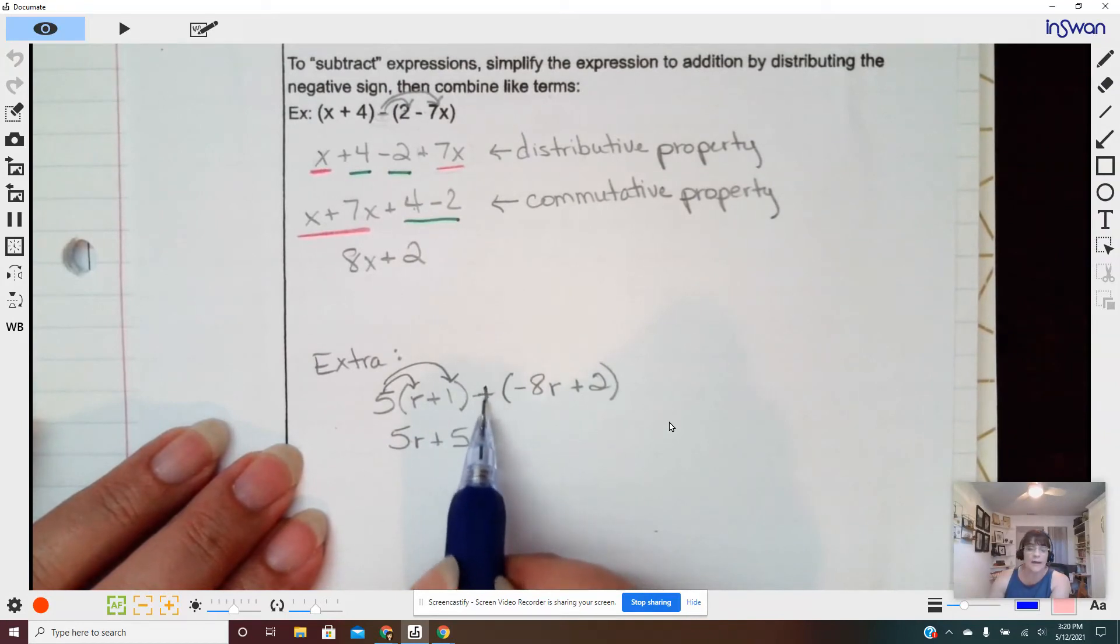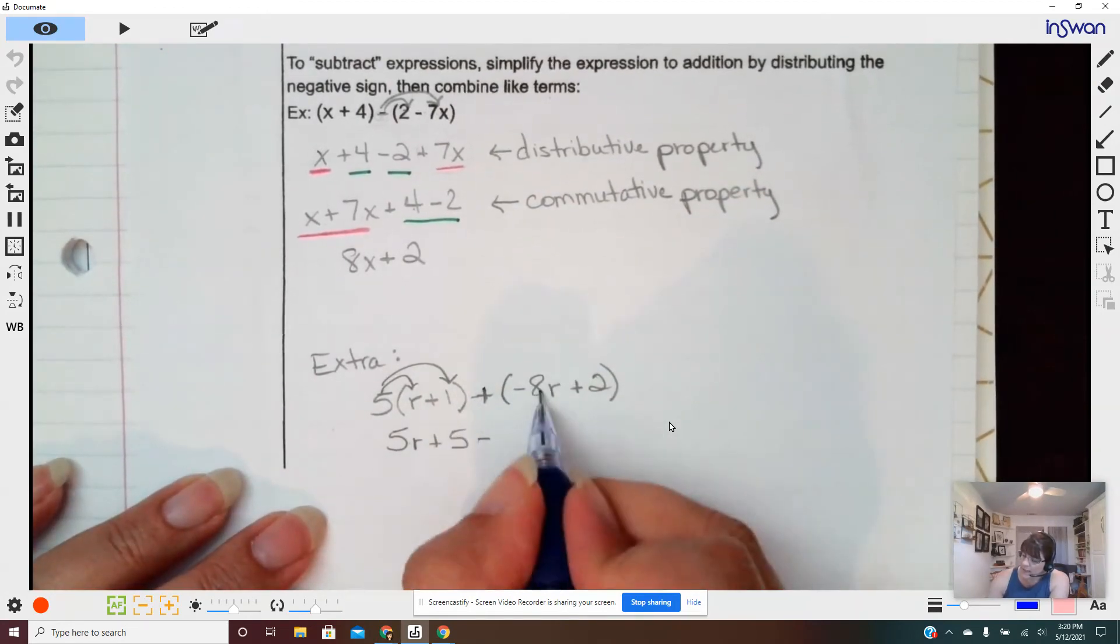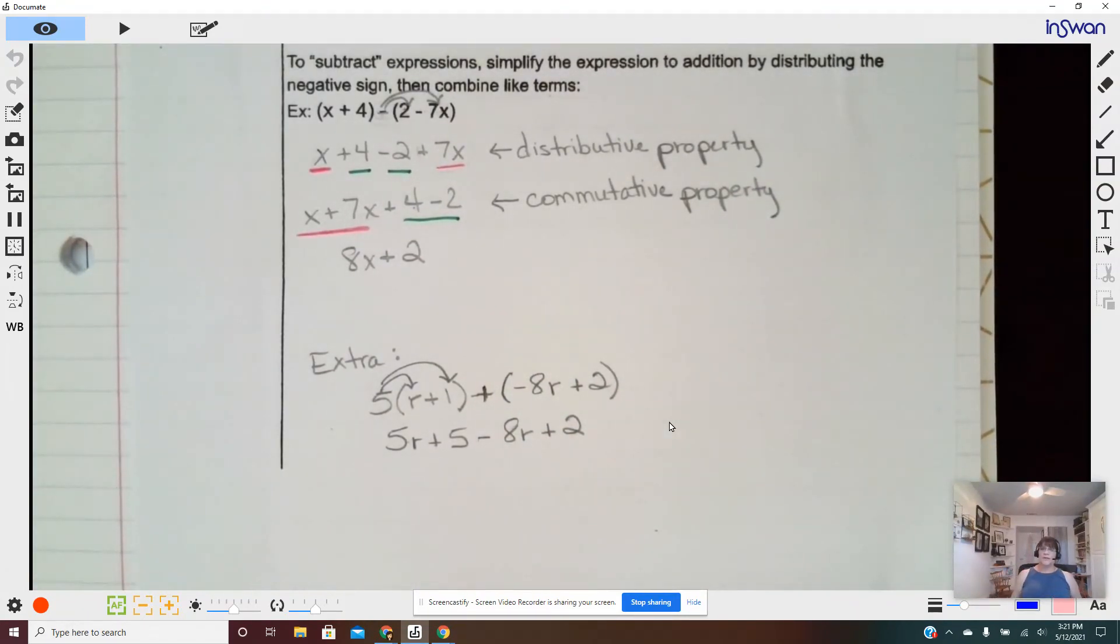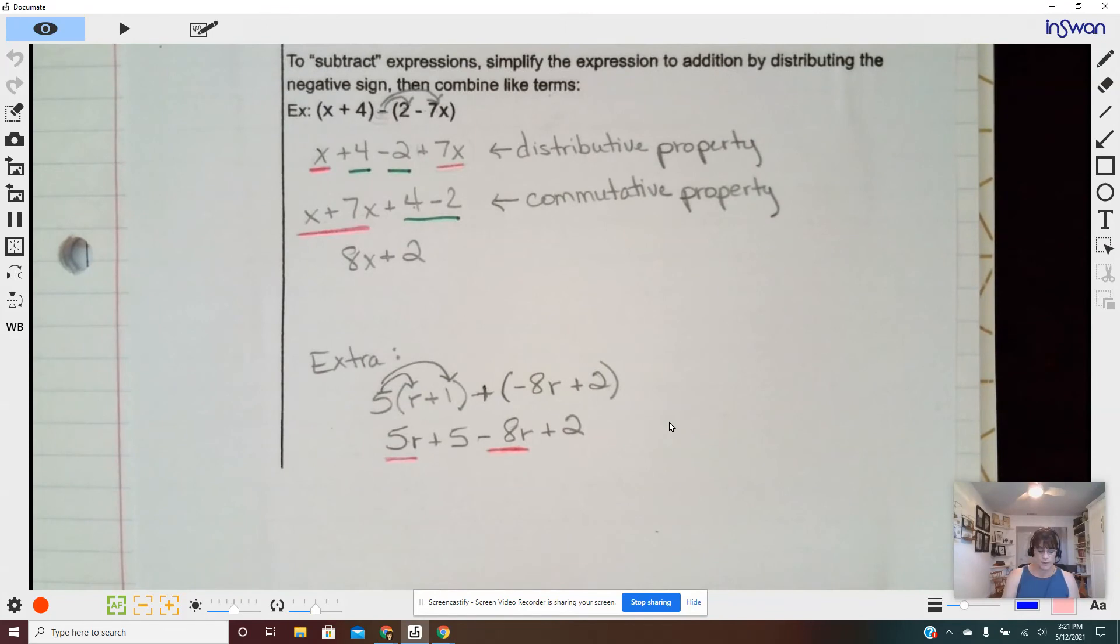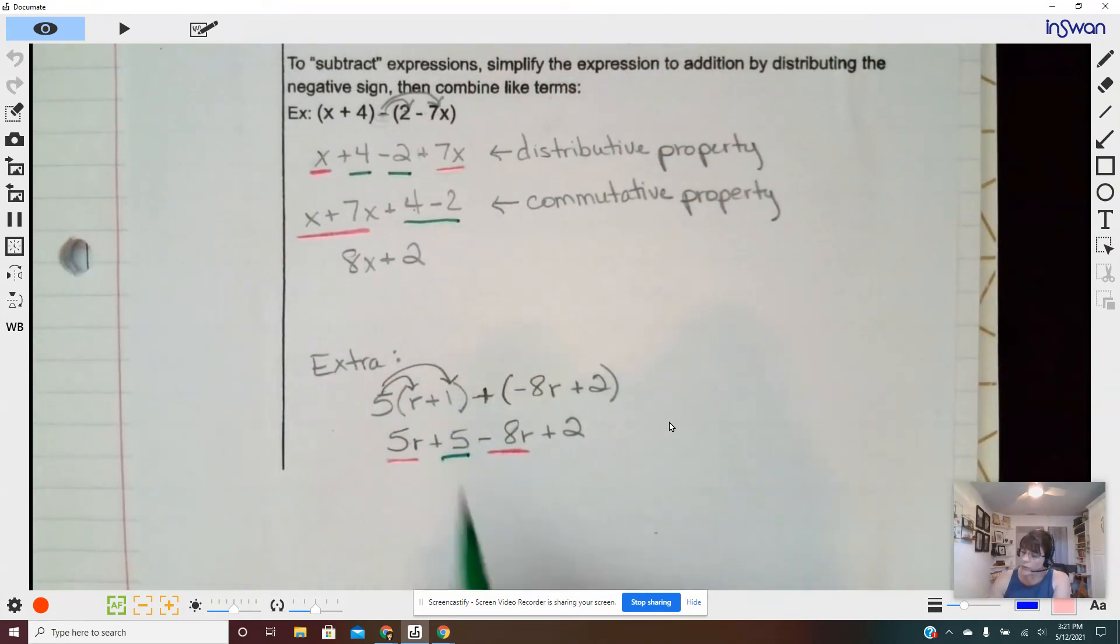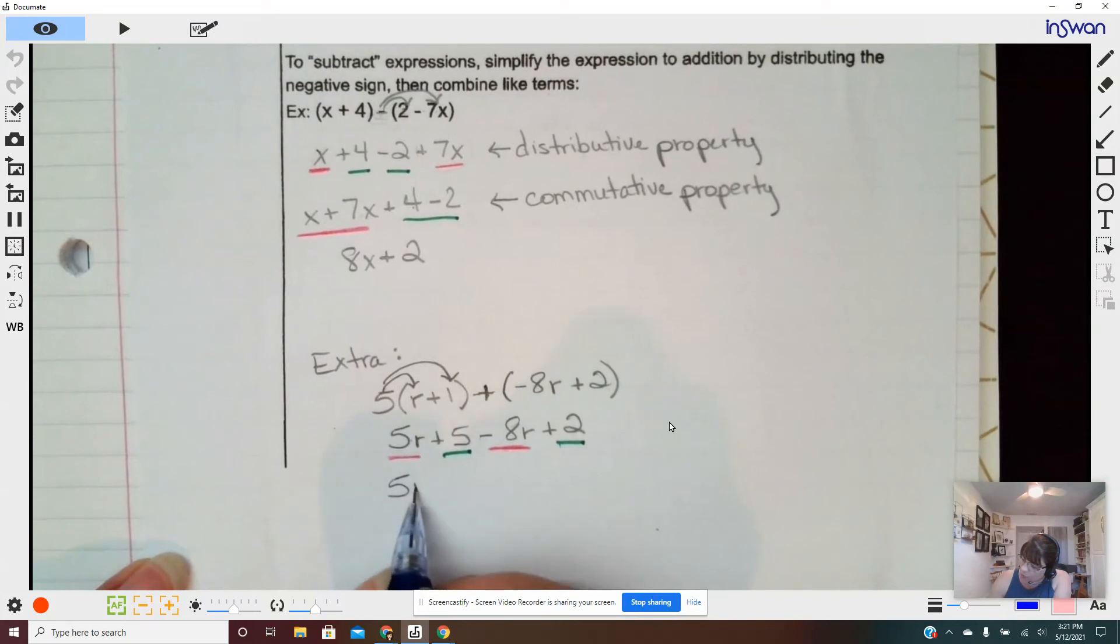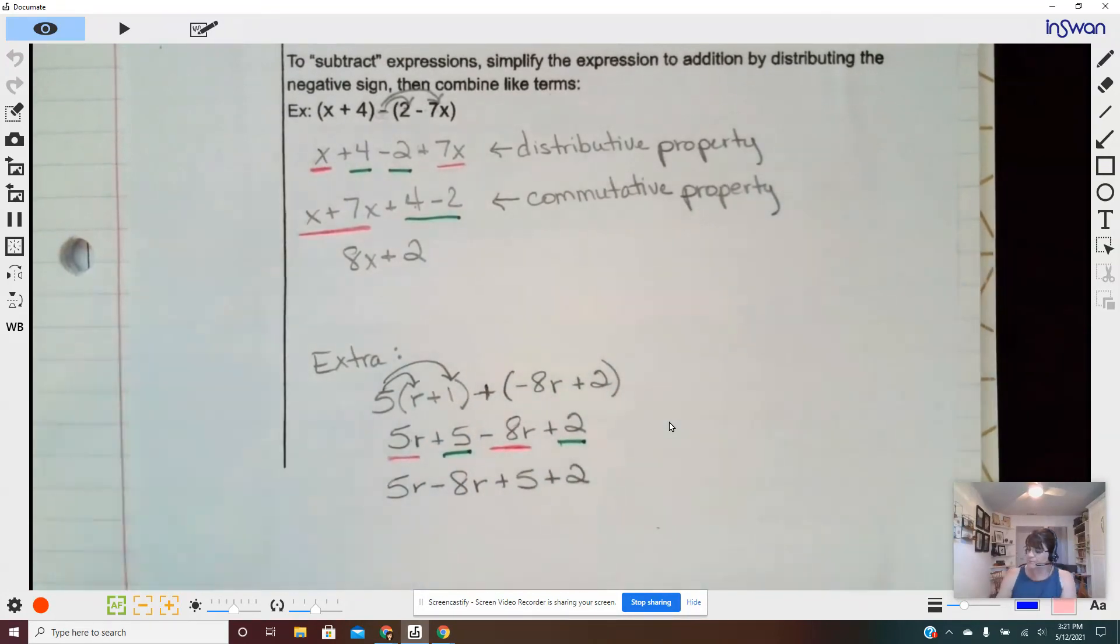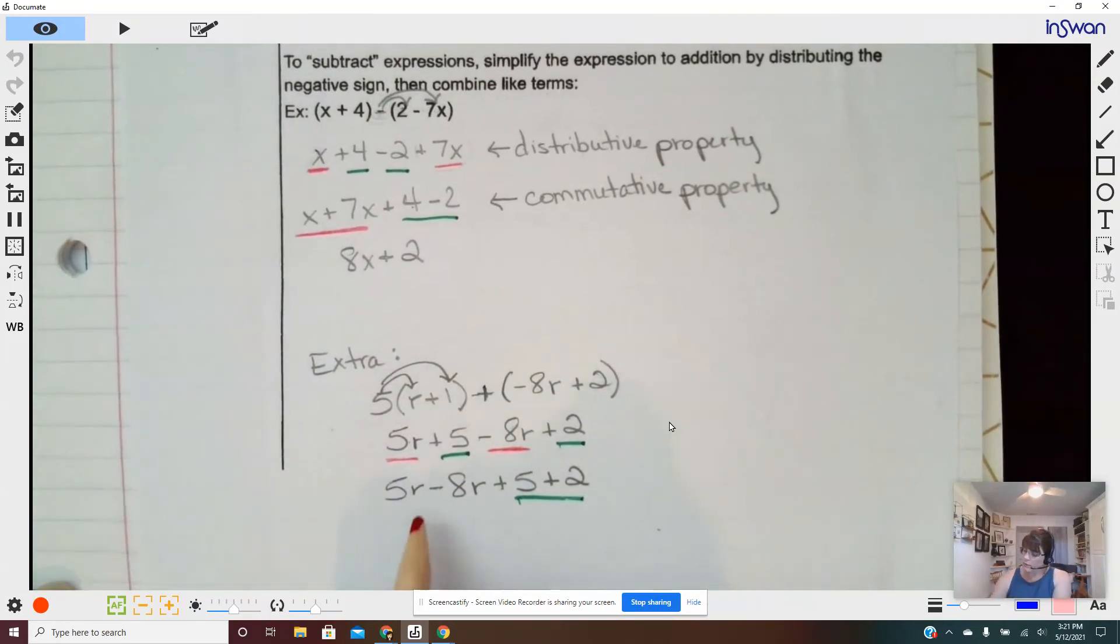Now, since I have a positive symbol here, that means that everything inside the parentheses remains the same. So negative eight R, because it didn't change, positive two. Oh my gosh, that already looks way better, right? So, I have five rabbits. I have negative eight rabbits. Oh, that's a problem. Five and two. Once again, I'm going to rearrange. Five R minus eight R plus five plus two. There's my constants. There's my rabbits.